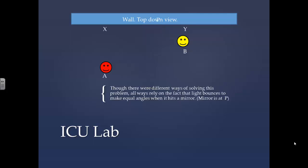Though there were different ways of solving this problem, all ways rely on the fact that light bounces to make equal angles when it hits the mirror. The mirror is at point P.